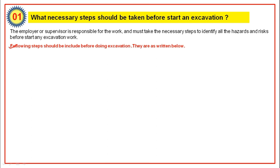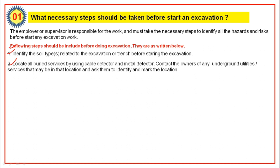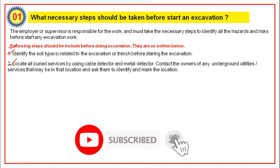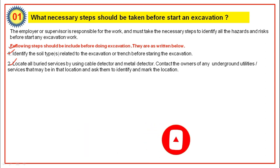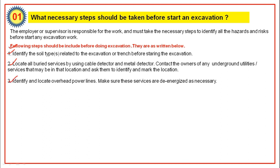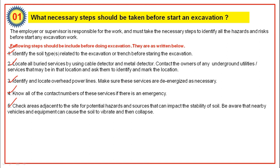Here are some steps that should be included before doing excavation. Identify the soil types related to the excavation or trench before starting. Locate all buried services using cable detectors and metal detectors. Contact the owners of any underground utilities or services that may be in that location and ask them to identify and mark the location. Identify and locate overhead power lines, and make sure the services are de-energized as necessary.